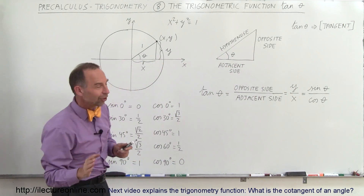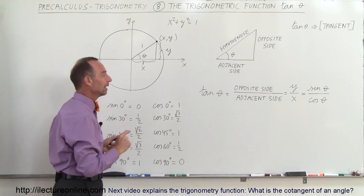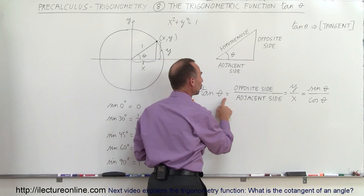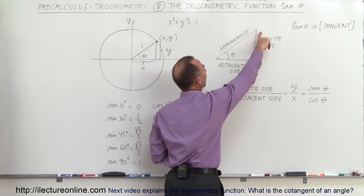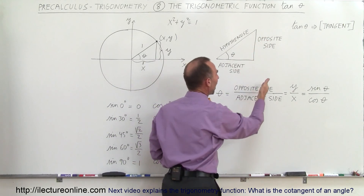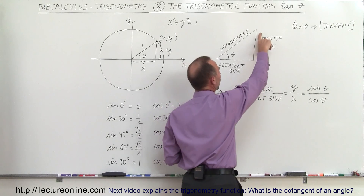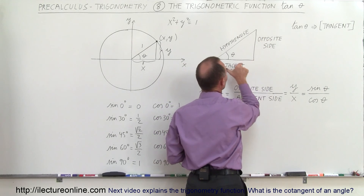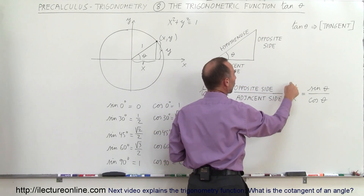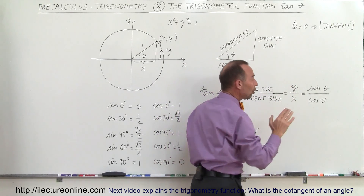The definition of the tangent: by definition, it's the ratio of the opposite side to the adjacent side. Since the opposite side is known as y and the adjacent side is known as x, we can say that's equal to y over x.